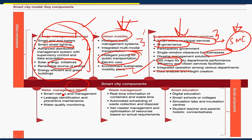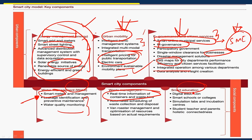In water management, smart meters must be fixed to ensure accountability for unsustainable water use, leakage identification and preventive maintenance, and water quality monitoring. In waste management, the components include real-time information on containers and waste bins for better collection, and automated scheduling of waste collection and disposal.